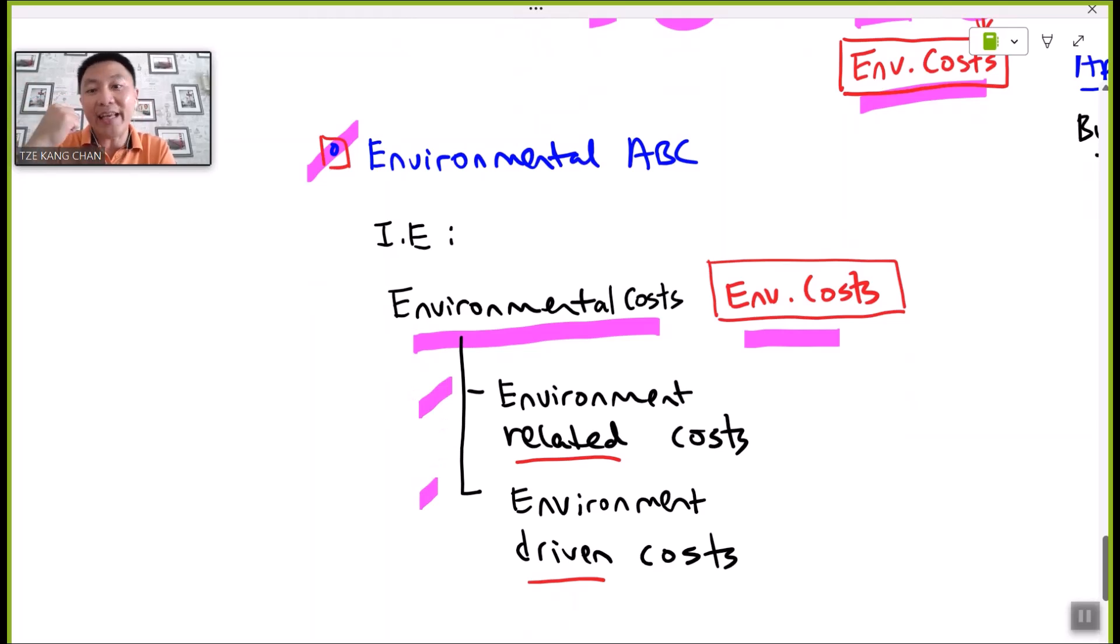Environment-related costs and environment-driven costs. The former is mainly referring to costs incurred in maintaining a team of people, a team of workers, or a department that is trying to safeguard and monitor the compliance and safeguarding of the physical environment. Whereas the latter costs are like waste processing costs, wastewater handling costs, etc. These are the costs that are driven mainly on environmental-driven activities.